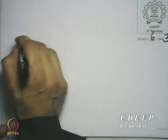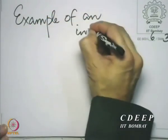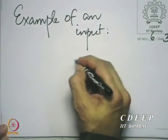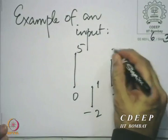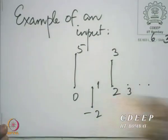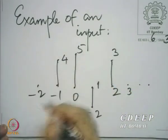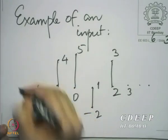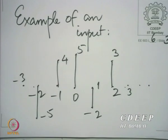Let us take an arbitrary example of an input. At n=0, let the input take the value 5; at n=1, minus 2; at n=2, the value 3. At n=−1, let it take the value 4; at n=−2, let it take the value minus 5. We will show that if we focus attention on this part between minus 2 and plus 2, we can express this as a combination of appropriately shifted and scaled unit impulses.